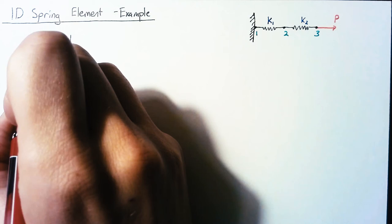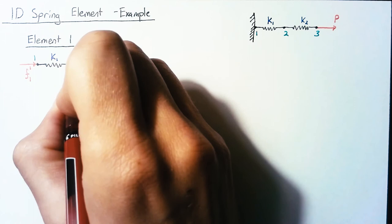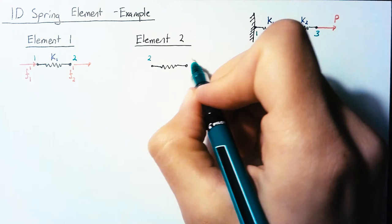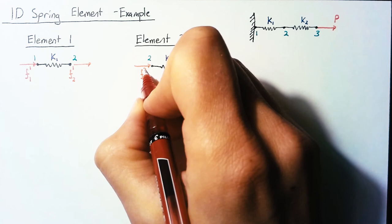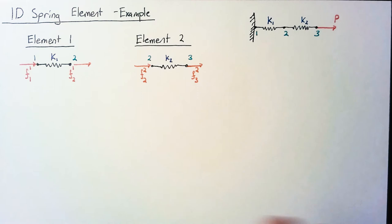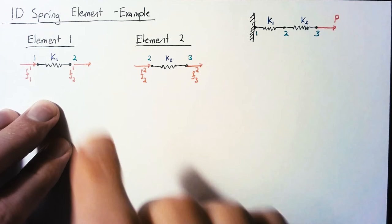And we'll do the same thing for element 2. These forces are going to be F on node 2 on element 2 and F acting on node 3 in element 2. Now that we have everything named properly, we can go ahead and apply the element equation that we derived in the previous video.